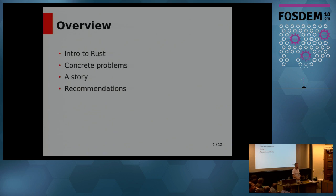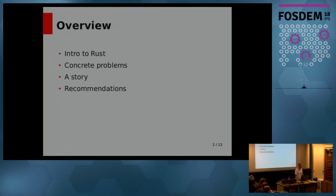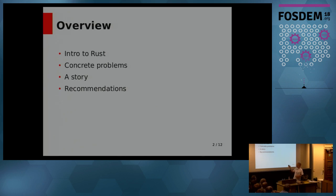So first I'd like to give an overview. We're going to talk a little bit about Rust — not a whole lot, but a little bit. We're going to talk about some of the concrete problems with expressing Rust's constructs in debug info. I'm going to tell you a little story about a recent problem I've worked on, and then talk about — well, it says here 'recommendations about what we should do,' but really what it is is complaining about other people's work.